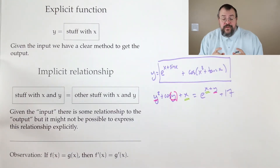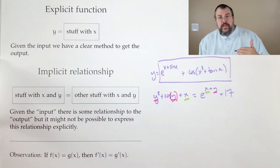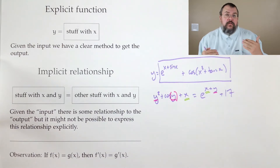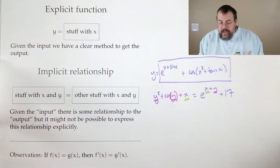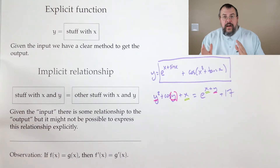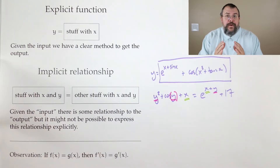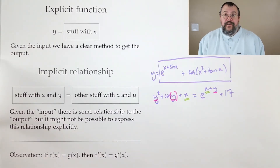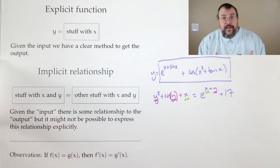Nevertheless, if you give me information about x, it forces y to obey certain things — usually one value or maybe a small number of values. It's not arbitrary, which means that as you change x, you can ask what happens to the change in y. Therefore it's a good question to ask: how does one variable change with respect to the other — in other words, what's the derivative?